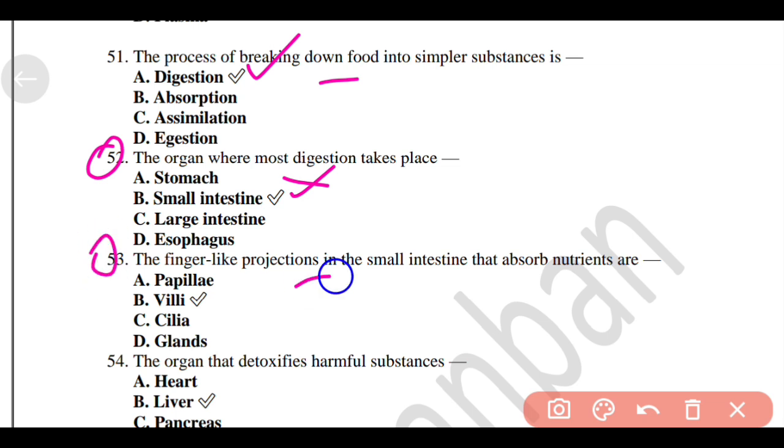The finger-like projections in the small intestine that absorb nutrition are Option B, Villi.